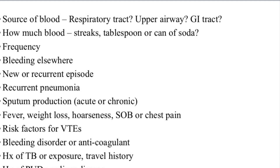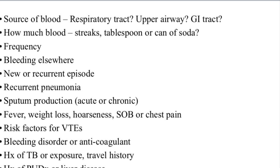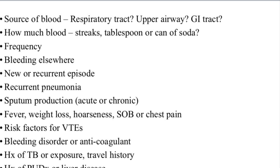Asking if the patient is bleeding elsewhere is very important, because this gives us a picture of a systemic cause of the disease rather than a localized cause. Also asking whether this is a new symptom or a chronic symptom will help us to distinguish between an acute or a chronic illness.